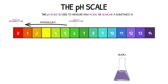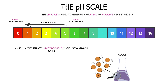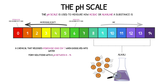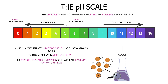An alkali is any chemical that releases an excess of hydroxide ions when dissolved into water. Alkalis form solutions with a pH between 8 and 14, where the strength of the alkali increases as the pH value increases. The strength of an alkali is determined by the number of hydroxide ions it releases — as the number of hydroxide ions increases, the strength of the alkali increases too.